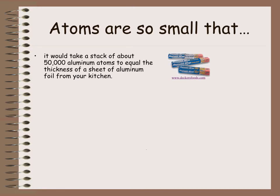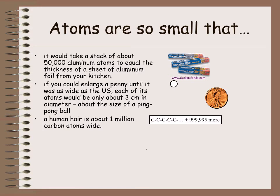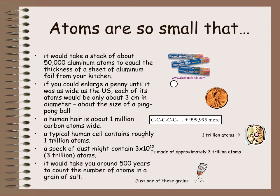Atoms are so small that it would take 50,000 aluminum atoms to equal the thickness of a sheet of aluminum foil. If you've ever held aluminum foil in your hand, you know it's extremely thin, and 50,000 atoms would need to be stacked on top of each other to make that sheet. If you could enlarge a penny until it was as wide as the United States, each atom would only be the size of a ping pong ball. And a human hair is 1 million atoms of carbon wide. If you took the top of a pin, you could fit a billion atoms on there.